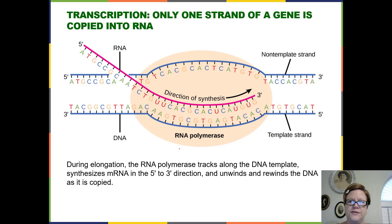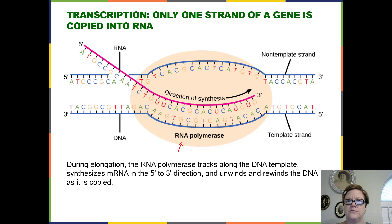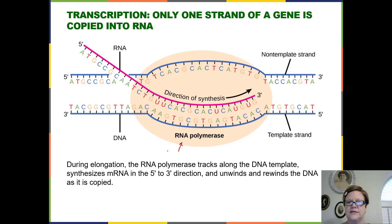Once the RNA polymerase moves forward — the RNA polymerase is this big orange circle — as it moves along, it separates the two strands of DNA. Whichever strand is being copied is called the template strand; the one not being copied is the non-template strand. It's always the same strand. Every time this gene is expressed, it's always the same bottom strand that's copied. The template strand is copied into RNA, shown in pink here.